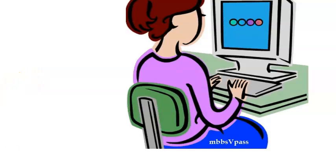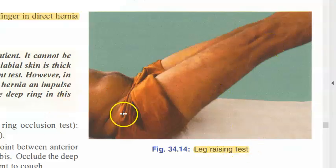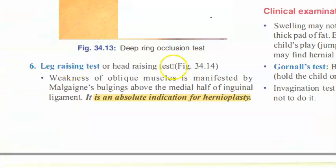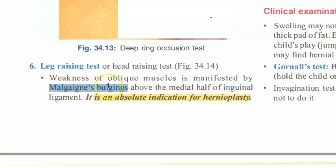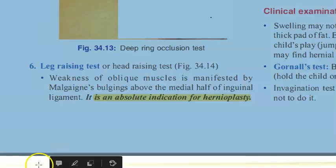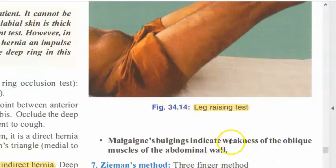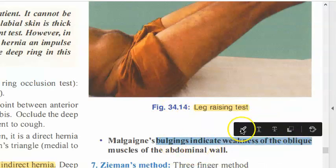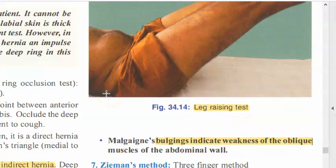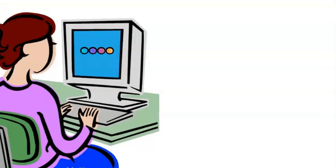The leg raising test or head raising test can be done depending on whether it is lower or upper abdominal. These tests reveal weakness of the oblique muscles, manifested as Malgaigne bulgings. This is an absolute indication for hernioplasty, where a mesh is placed to reinforce the weak abdominal wall.